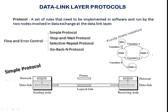So let's see what protocols we follow when there is an issue in flow or an error in the collected data. There are four protocols: simple protocol, stop and wait, selective repeat, and go-back-N. The first two — simple and stop-and-wait — are widely used, while the other two are not as popular.